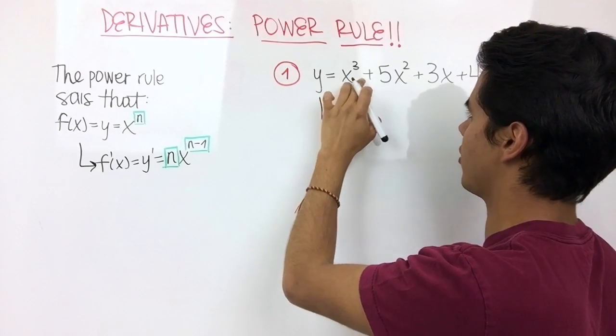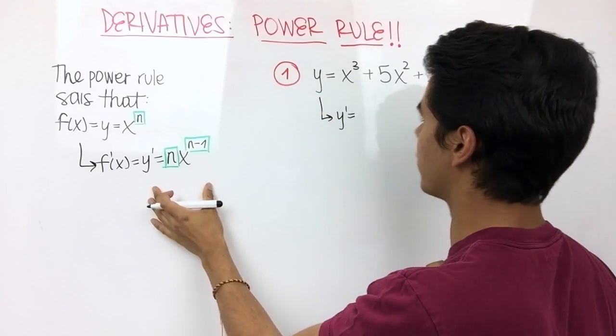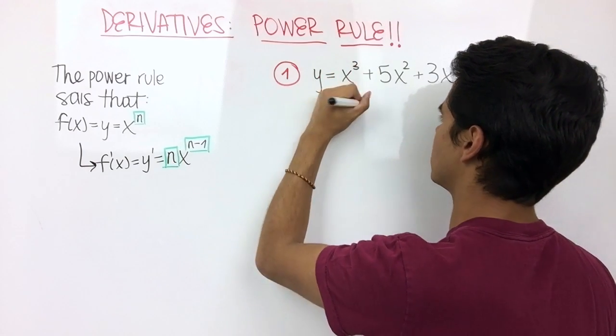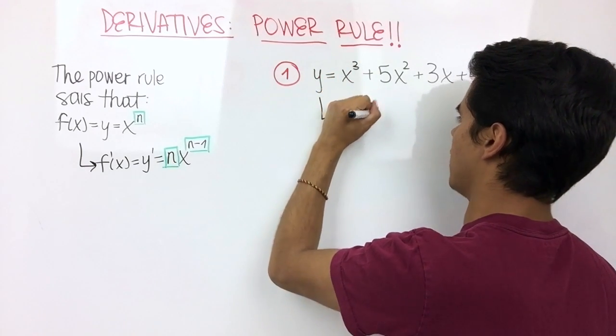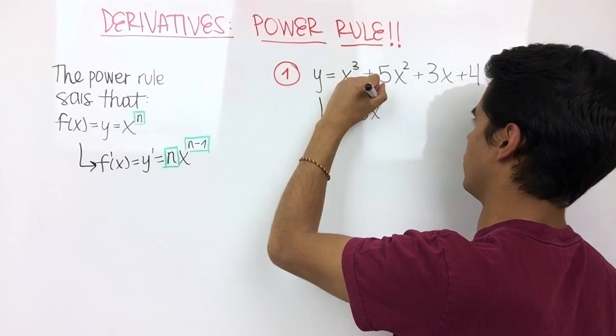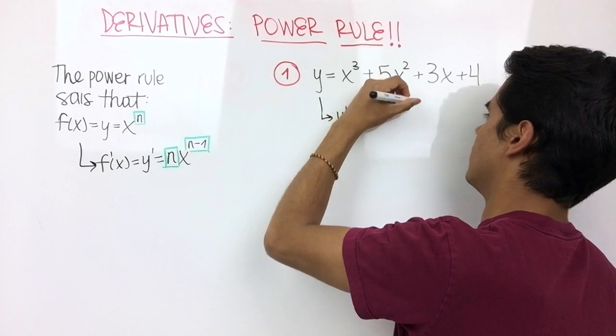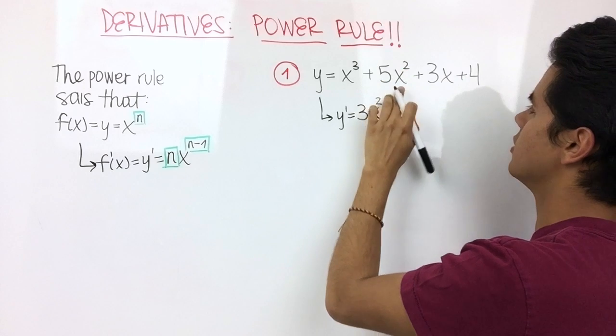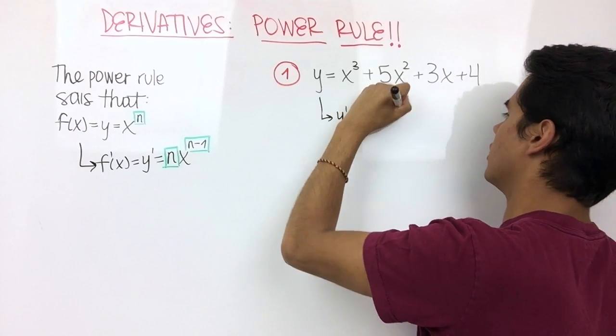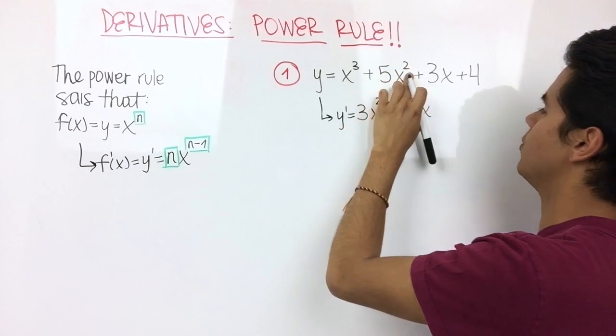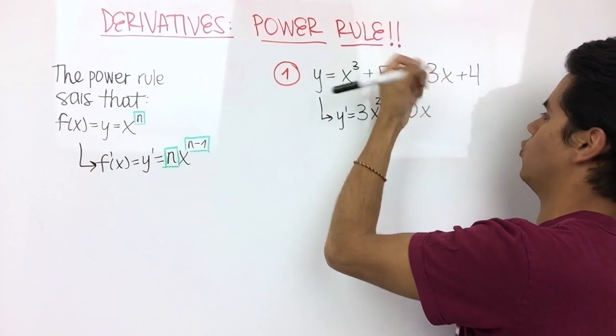The derivative of x to the third power, according to the power rule, is equal to—we just stick this number in front of x, so 3 times x to the power of this number minus 1, so 3 minus 1 is 2. Plus, since we already have a number in front of x, we just multiply this number by the power, so 5 times 2 is 10x to the power of 2 minus 1 is 1.